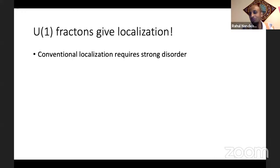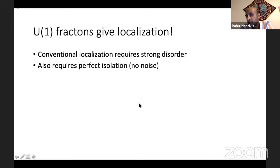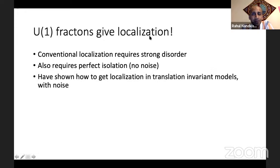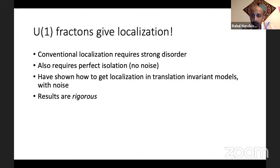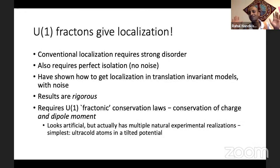If you consider U(1) models with fracton-type conservation laws, this actually gives rise to localization. Just a reminder: in conventional Anderson localization and many-body localization, it requires strong disorder, and also requires perfect isolation so you cannot be subject to noise or any heat bath. But with fracton-type conservation laws, we can get localization in translationally invariant systems — so no strong disorder — and we can also get localization in systems with noise, so there's not even energy conservation. Moreover, the results are rigorous — you can prove things exactly.